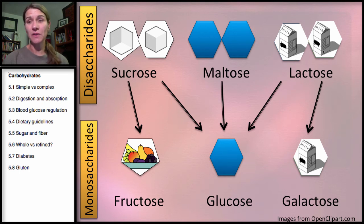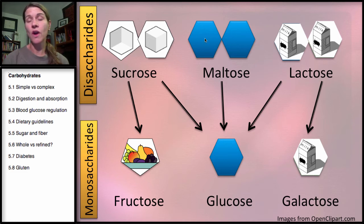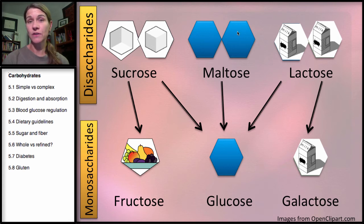When you drink milk, you will consume lactose, and your body will break this down into glucose and galactose. Any starch that you eat, or long sugar chains like a maltodextrin, is going to break down into maltose. Malted barley will also have some maltose, and that breaks down just to glucose.